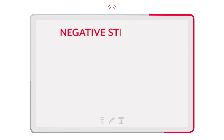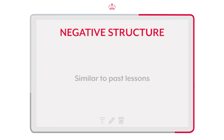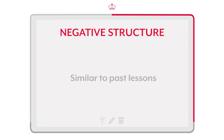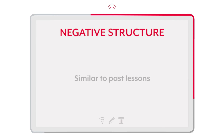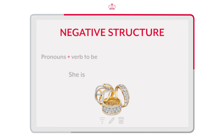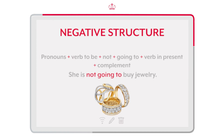For the negative form, the structure is the same form we have been working for the past classes. Para la estructura en negativo, utilizamos el mismo formato utilizado en las clases pasadas. We have the pronouns, then the verb 'to be' in present form, and of course the 'not' before the 'going to' and the verb. Tenemos los pronombres, después el verbo 'to be' en presente y por supuesto el 'not', antes del 'going to' y el verbo.